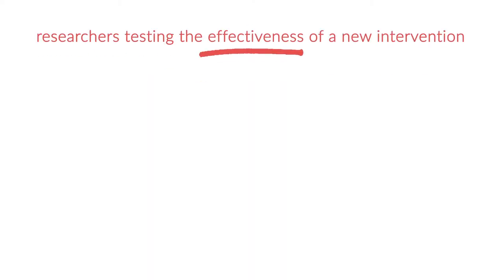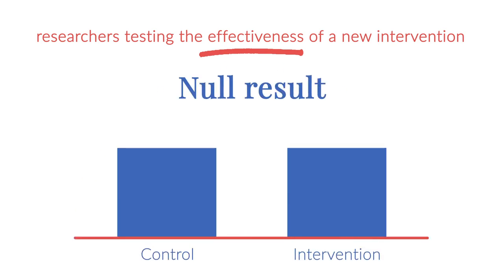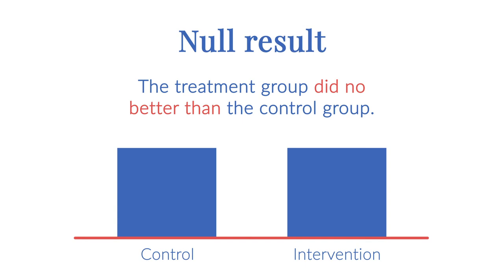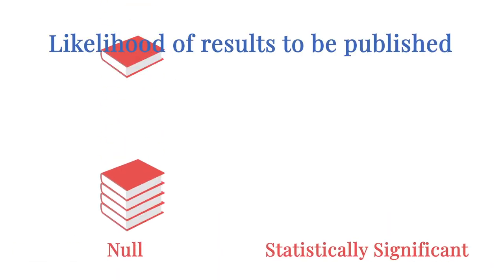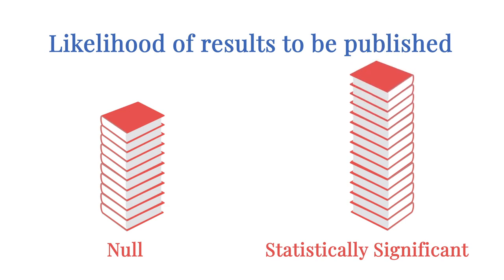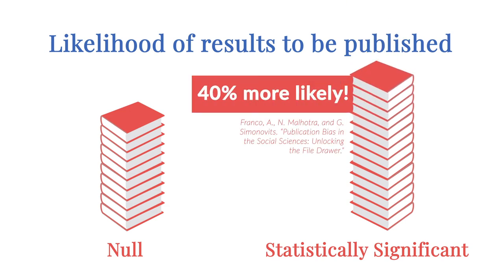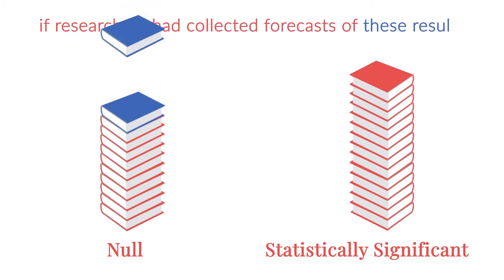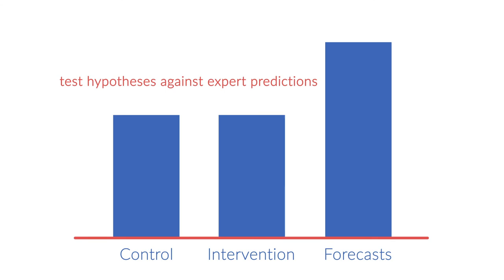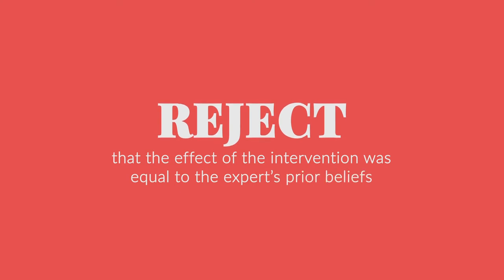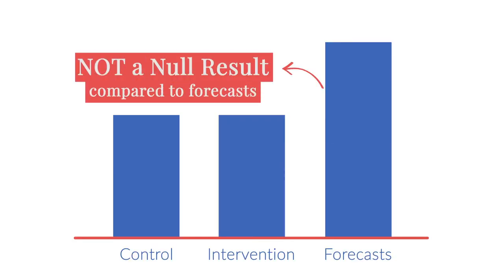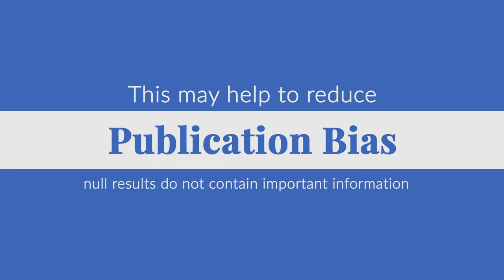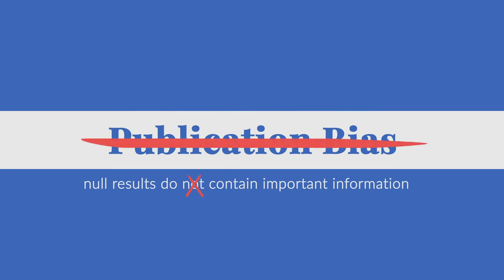But why would we want to collect forecasts in the first place? Consider researchers testing the effectiveness of a new intervention. They run a large RCT which finds a precise null result — the treatment group did no better than the control group. Evidence suggests statistically significant results in the social sciences are 40% more likely to be published than null results. If researchers had collected forecasts of these results, they could test their hypotheses against expert predictions. The researchers could reject that the effect of the intervention was equal to the experts' prior beliefs. Thus, the paper is not a null result and may be more likely to be published, helping to reduce publication bias by dispelling the notion that null results do not contain important information.